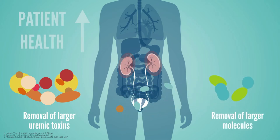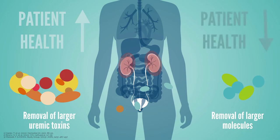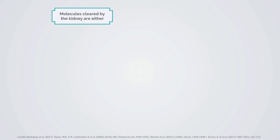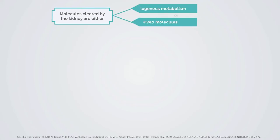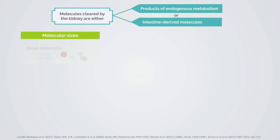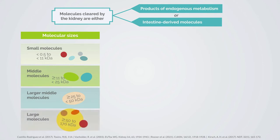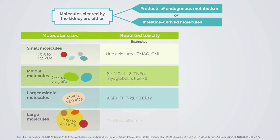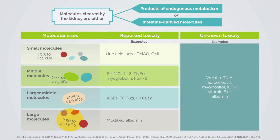At the same time, removal of large molecules, such as albumin, closely predicts mortality in patients. Rosner and colleagues therefore proposed an updated classification of uremic toxins according to protein affinity and molecular weight, with a distinction on whether or not scientific evidence is available on pathological outcomes.